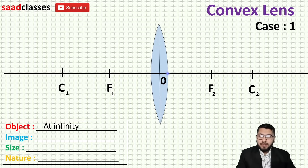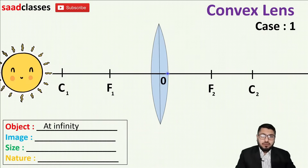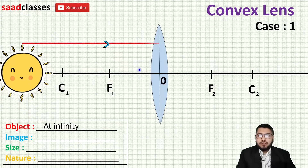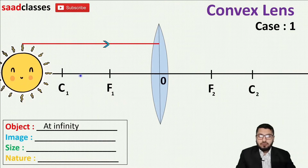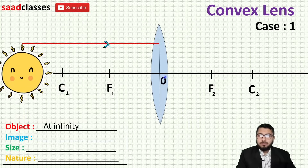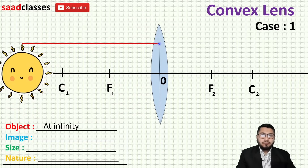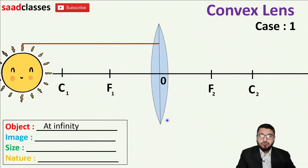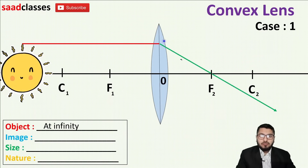Case number one: my object will be at infinity. I consider infinity to be the sun because the rays coming from the sun are generally parallel. I will take one ray at a time. The ray is parallel to the principal axis — this black line is my principal axis. By the rules we have learned, after refraction through the lens, the ray will pass through focus.